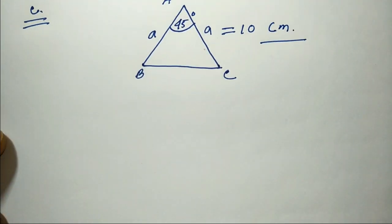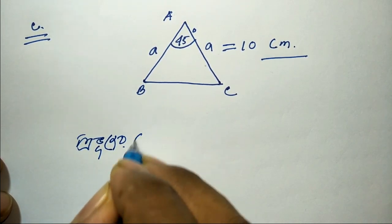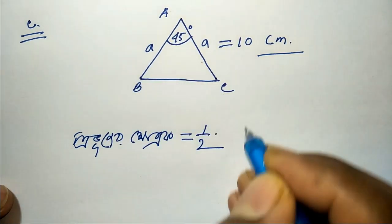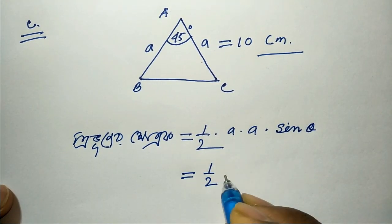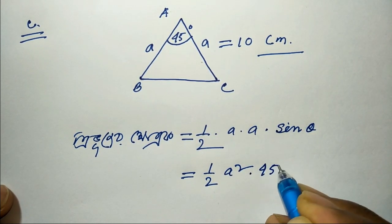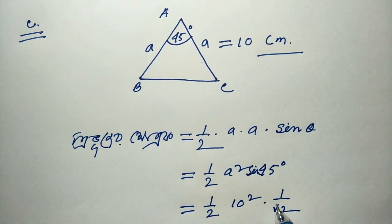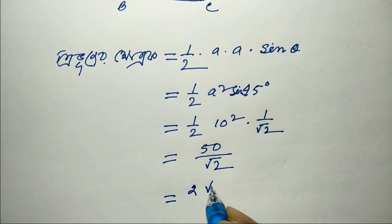So this side is equal to 10 cm. Now, the area formula: Area equals half times a-squared times sine theta. Substituting: half into 10-squared times sine 45 degrees, which is 1 by root 2. That gives 50 by root 2, then 25 by root 2.